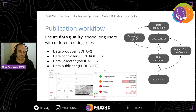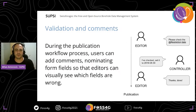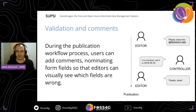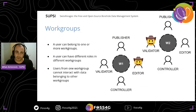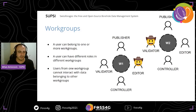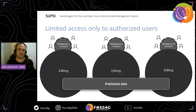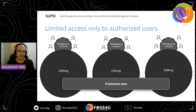During this process, all users can add comments using a tool that can target specific fields, so users can talk to each other in each step. We have also added workgroups — every workgroup can have different users, and the same user can belong to different workgroups with different roles. Each workgroup has a workspace where data is visible only to its users, until the publication process is finished and the published data become available to everyone, including guest users.